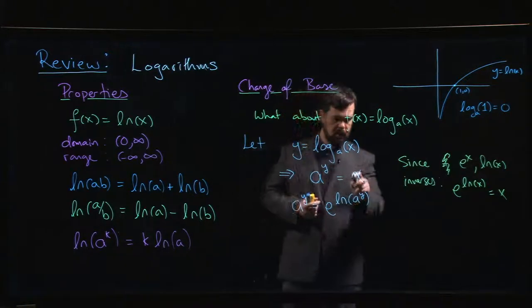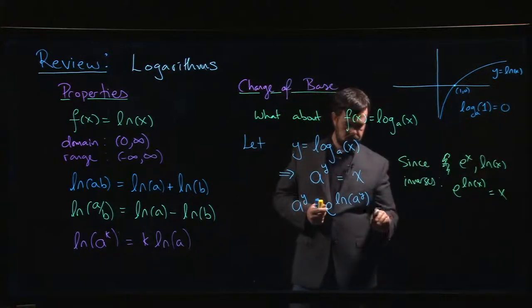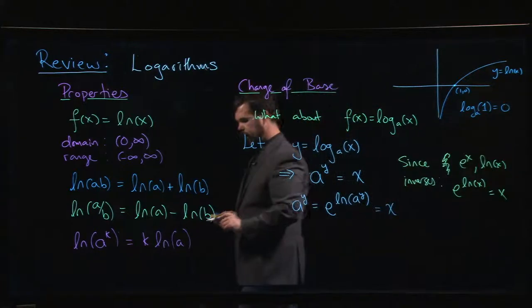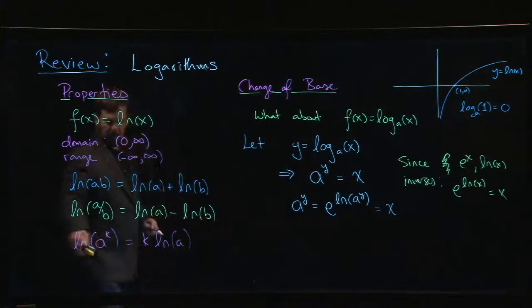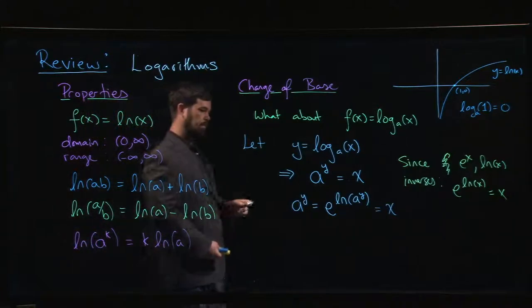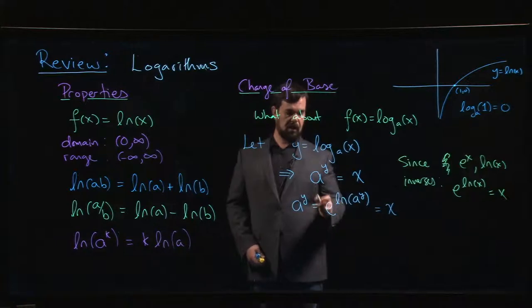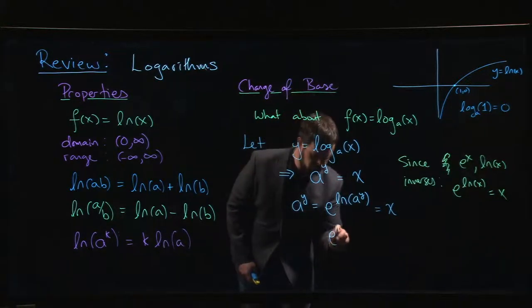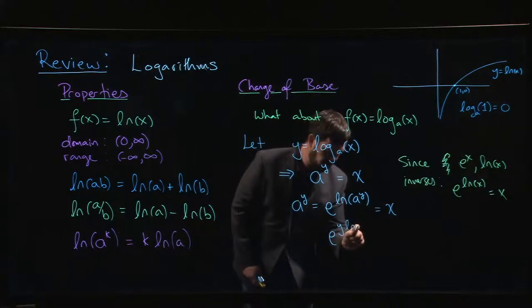Okay, and that in turn was equal to x. Now remember that we have this property down here—we can bring the k out front. So I can bring that y out front. So I can say that e to the y times the natural log of a is equal to x.